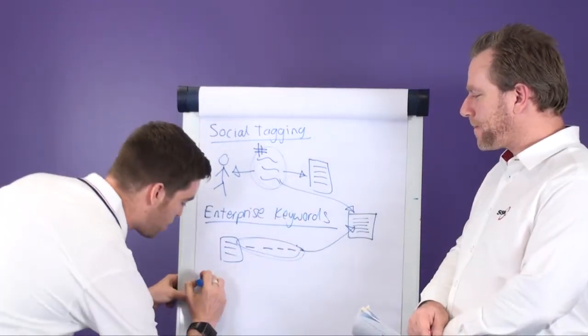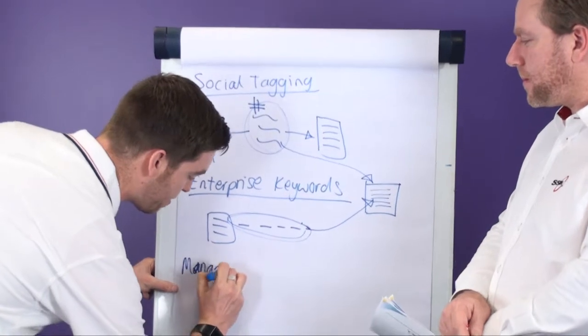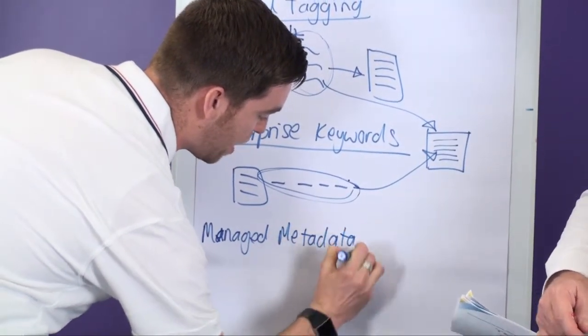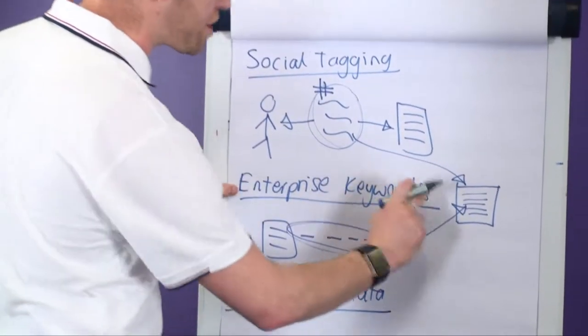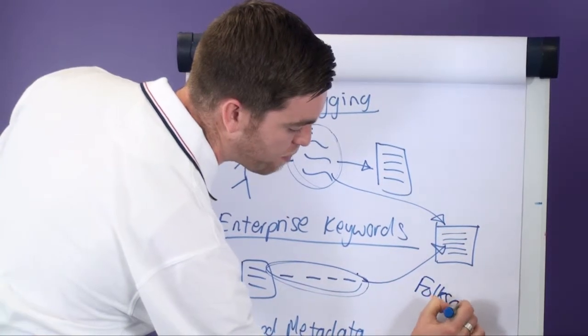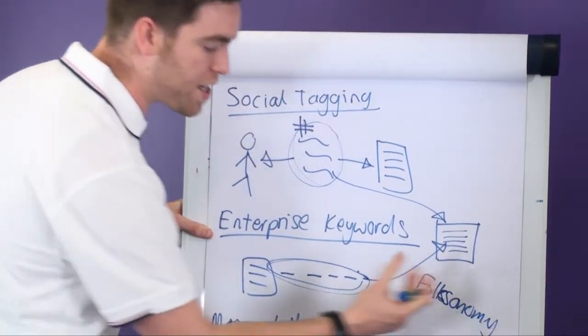The final option - that's the good one - this is the managed metadata. So with the options that we've looked at so far, enterprise keywords is generally what we refer to as folksonomy, which means that it's kind of free text if you like. It allows people to tag it with whatever terms they see fit, and it's very, very flexible.